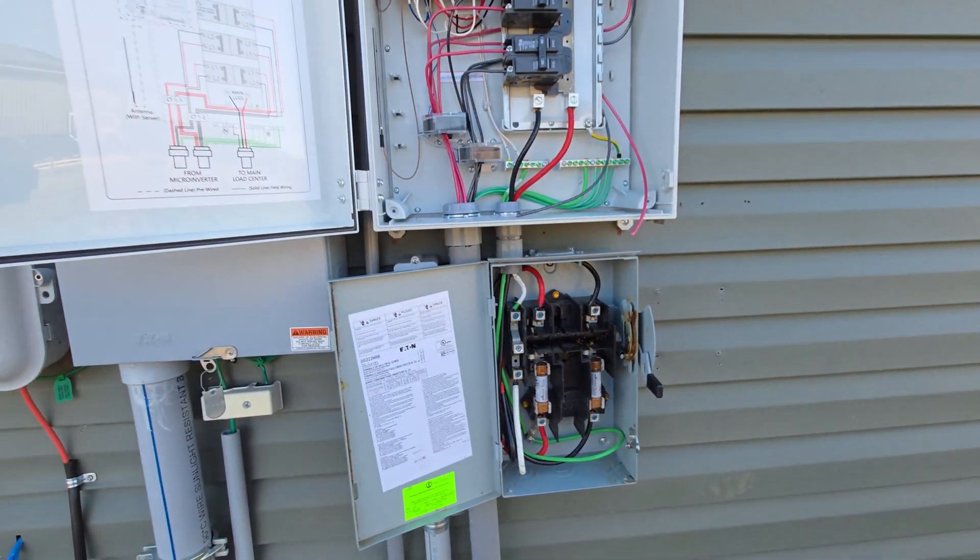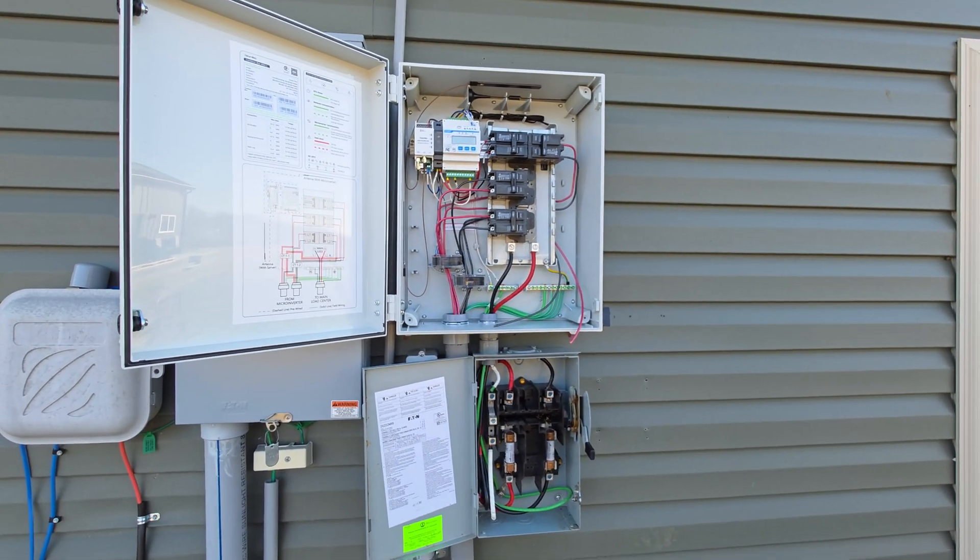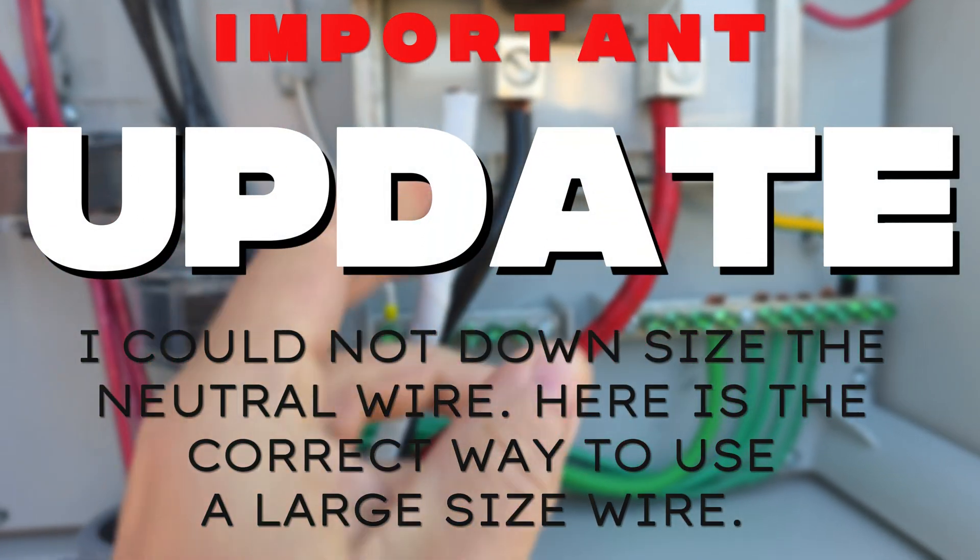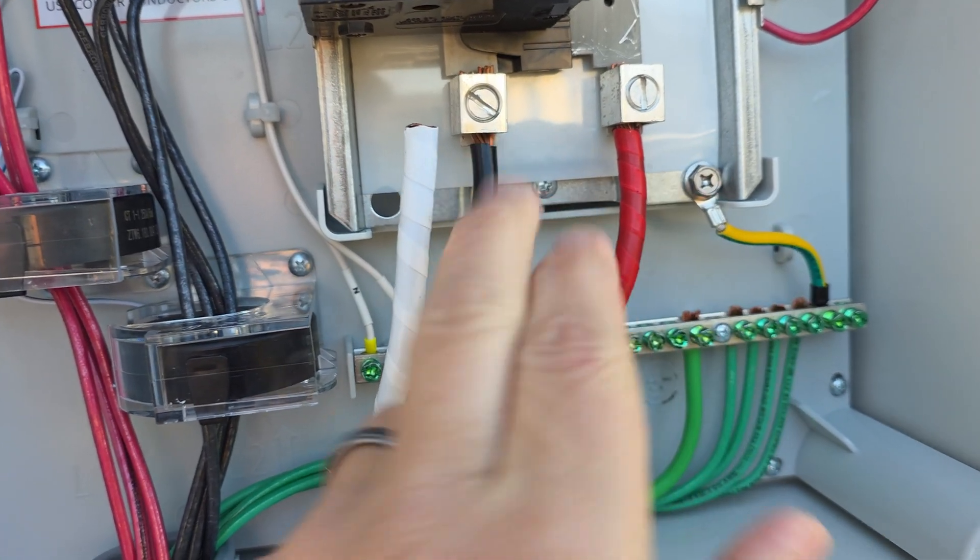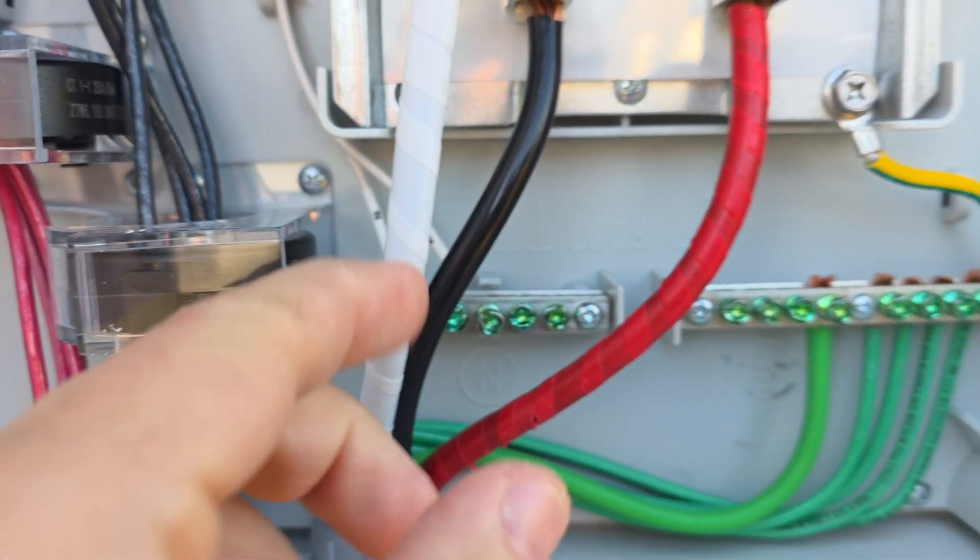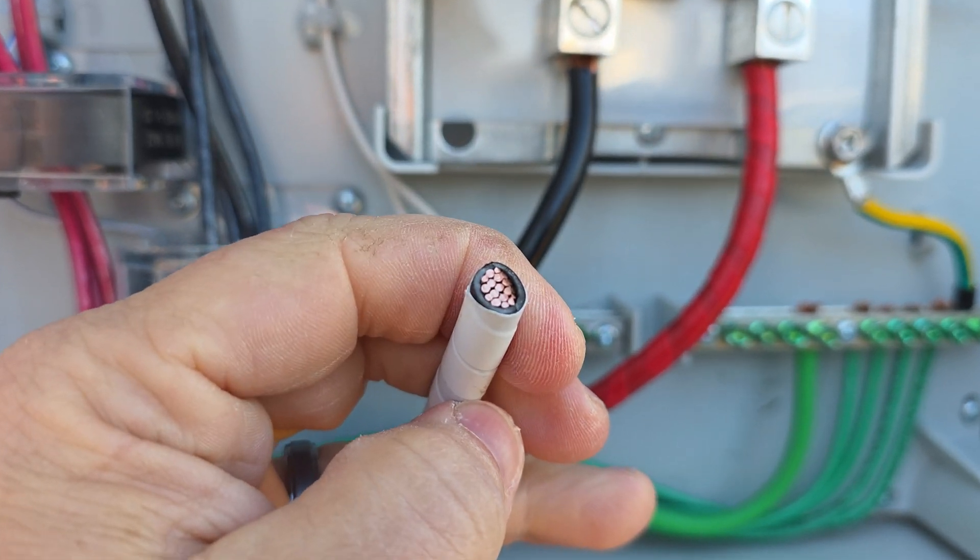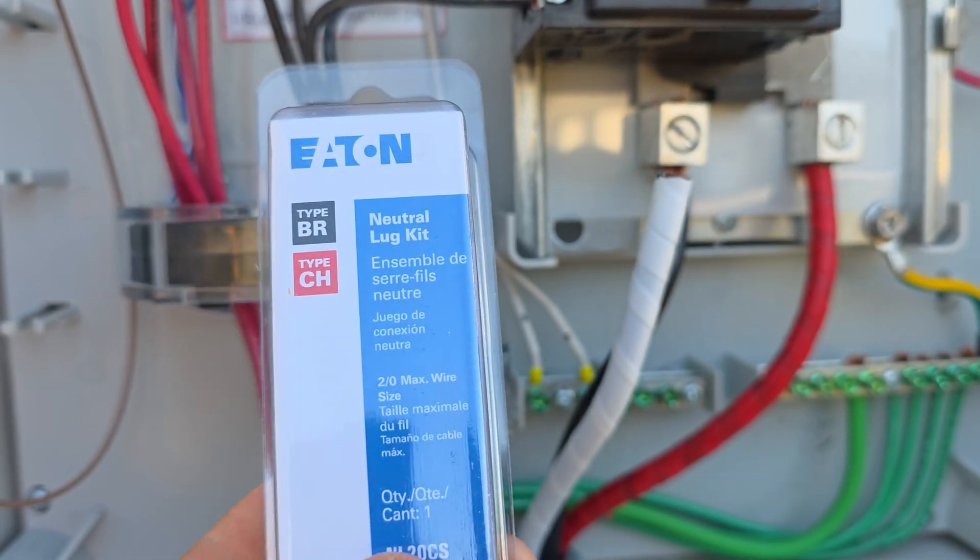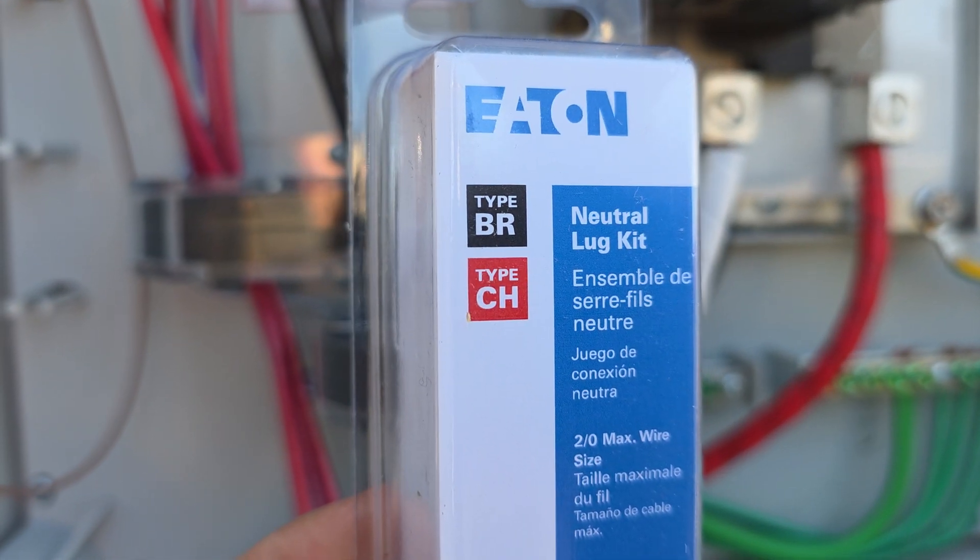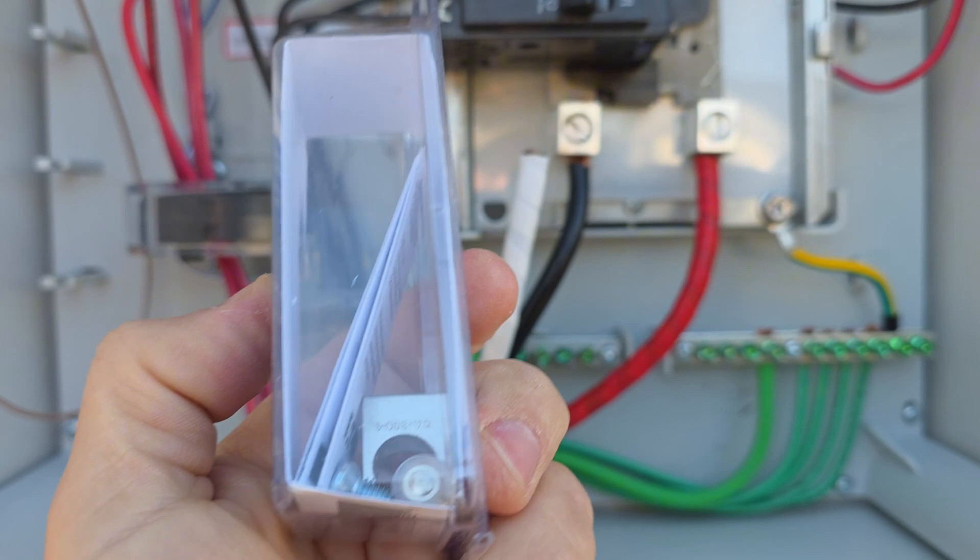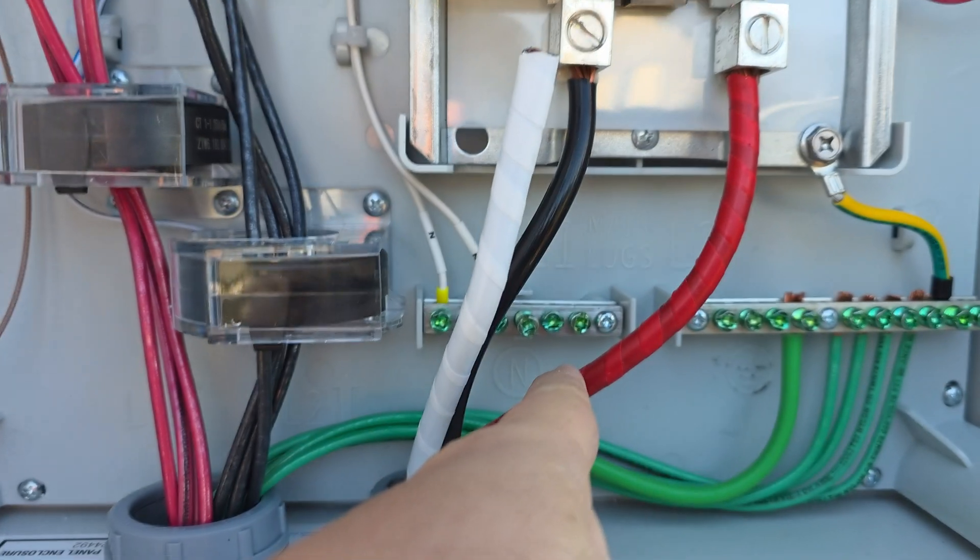If you're going to be using a number four neutral wire, number fours work perfectly in here, no problem. But this neutral bar back here is only capable of going up to six gauge wire and I'm using a four gauge wire here. So you're going to need to buy you something like this right here, a neutral lug kit. This is good for the BR and CH type panel boxes. And this is a BR. So what we'll do is attach this lug to that bar, then this wire to this lug.